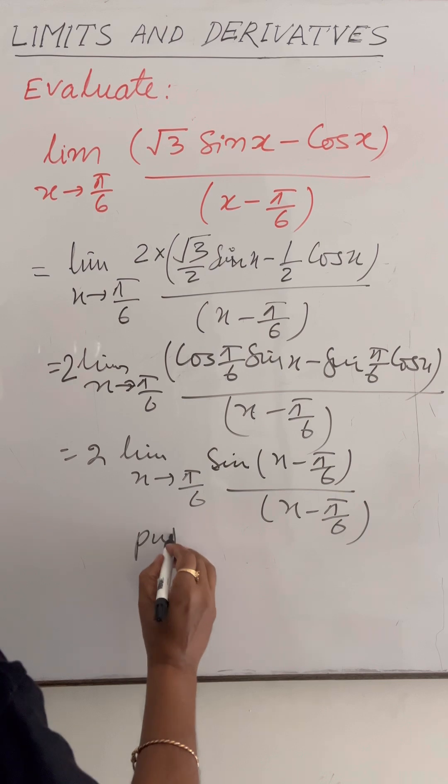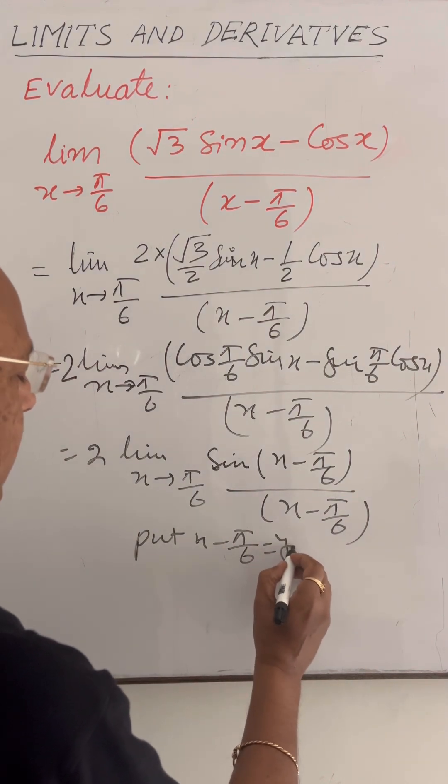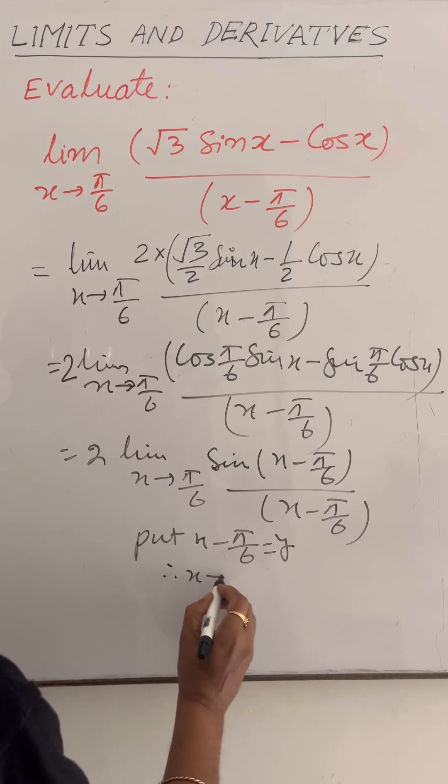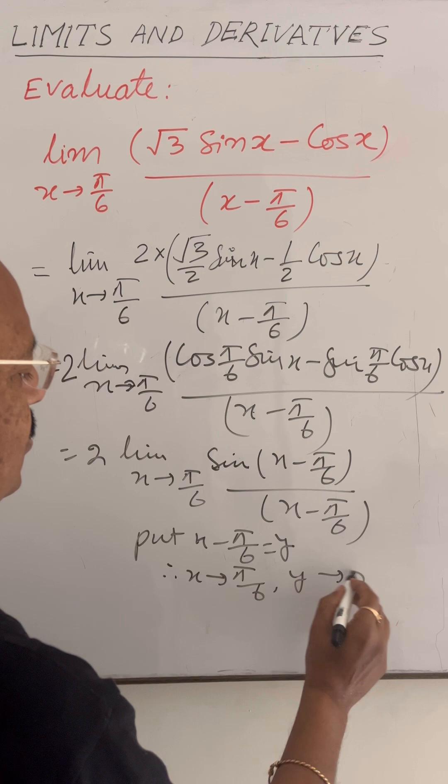Here we will put x minus π by 6 equal to y. So therefore when x tends to π by 6 we will get y tends to 0.